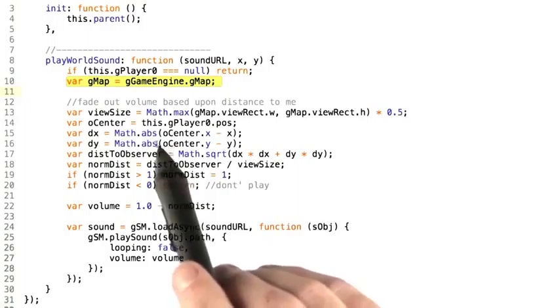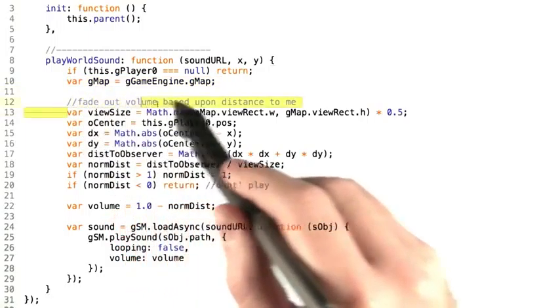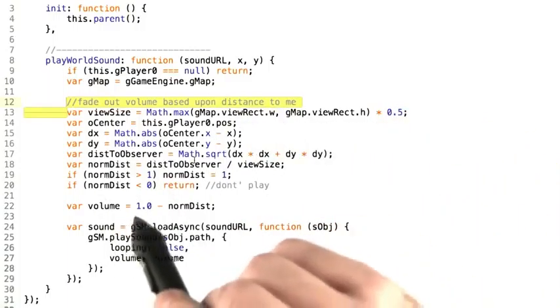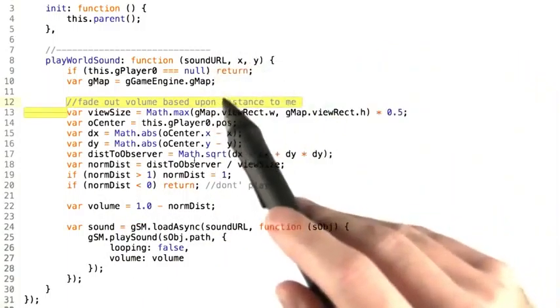And now we're going to do the calculation for fading the volume out based upon the distance from the player that the sound is supposed to be played at.